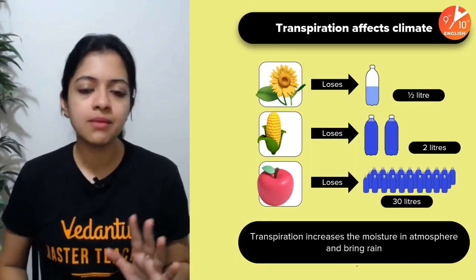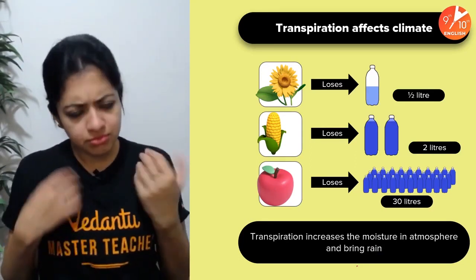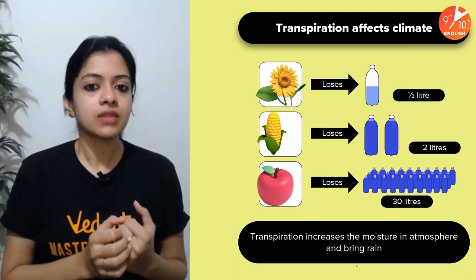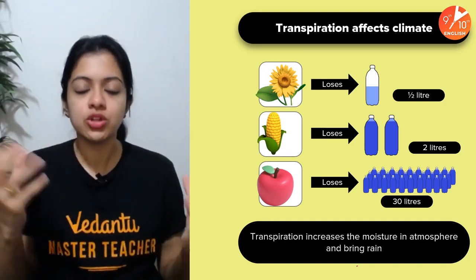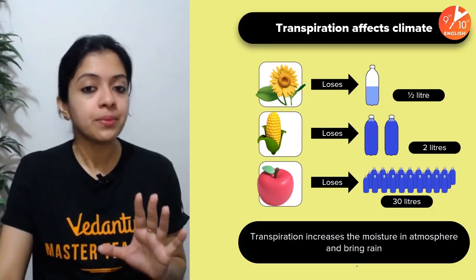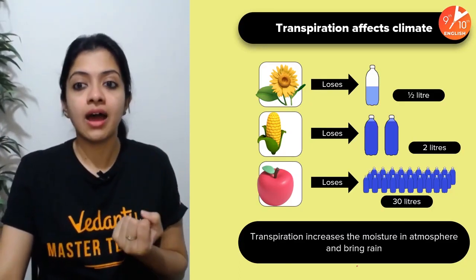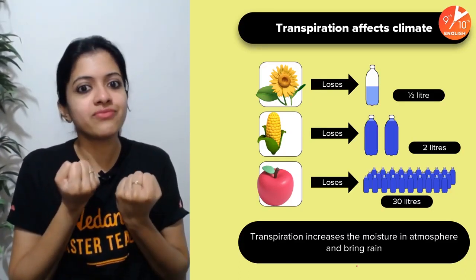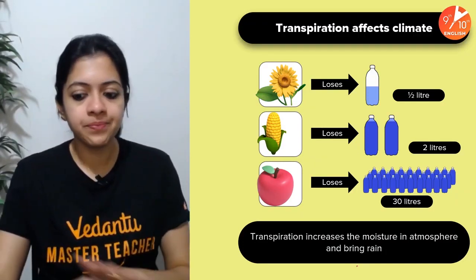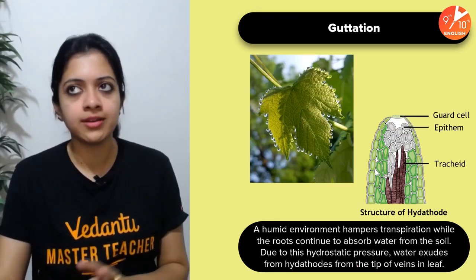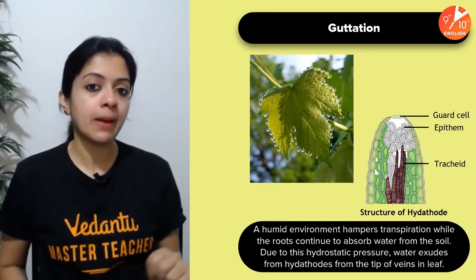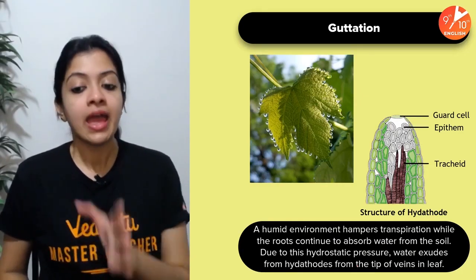Transpiration also has the ability to increase moisture content in the atmosphere and bring down rain. This is why forests are an extremely valuable resource — they play a critical role in regulating the global climate. Two additional terms to know are guttation and bleeding.